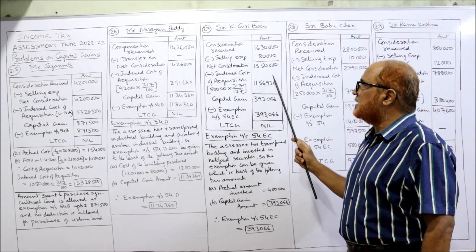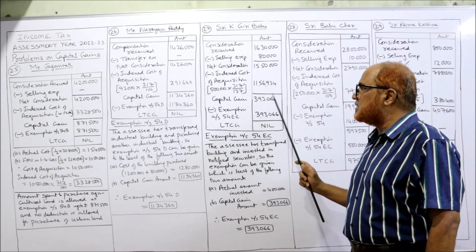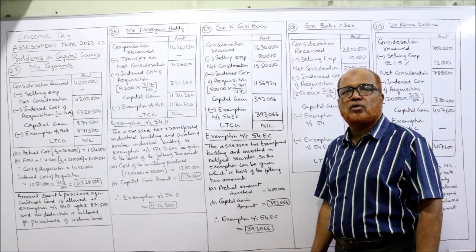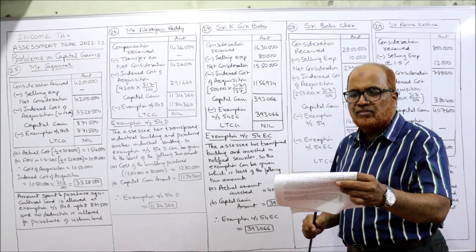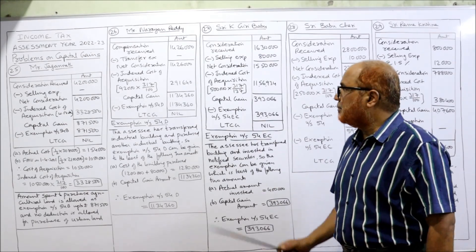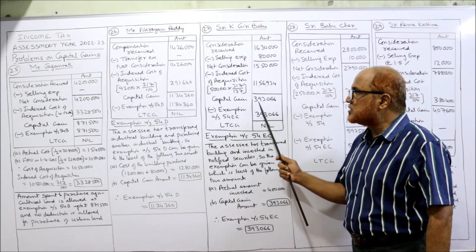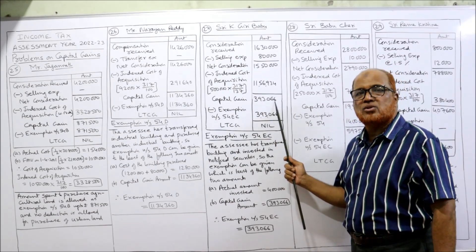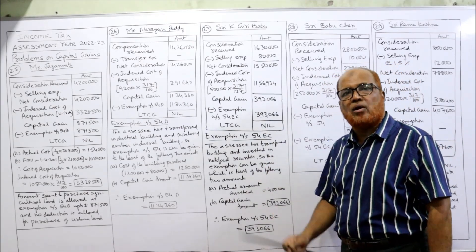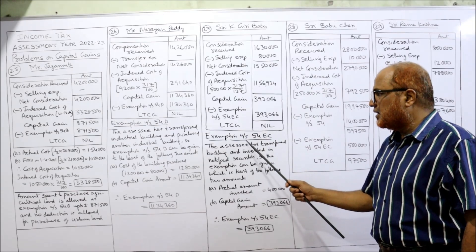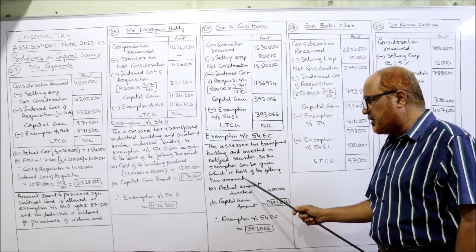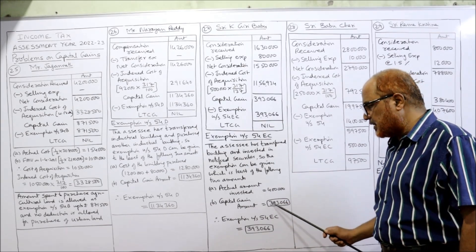So indexed cost = 11 lakh 56,934. Deducting from 15 lakh 50,000 gives capital gain of 3 lakh 93,066. Now exemption under Section 54EC: he invested 4 lakh rupees, but exemption cannot exceed the capital gain of 3 lakh 93,066. Whichever is lower — 4 lakh or 3 lakh 93,066 — will be allowed as exemption. The assessee transferred a building and invested in a notified security, so exemption is the least of: actual amount invested or capital gain. That is the end of problem 27.